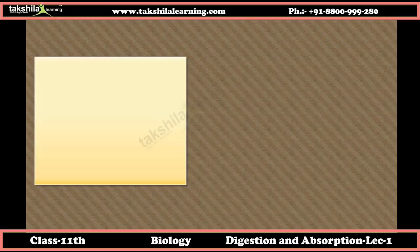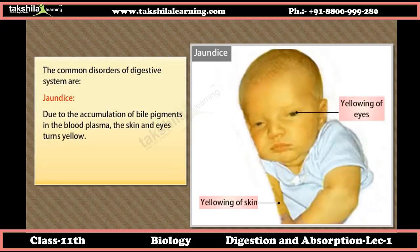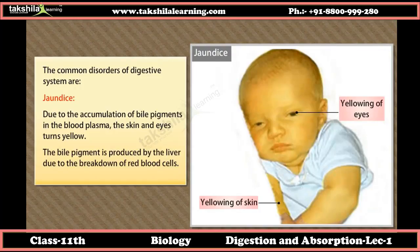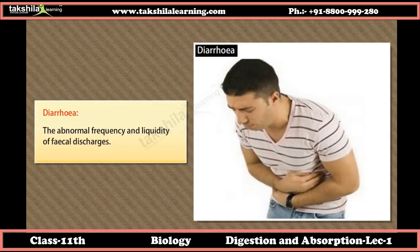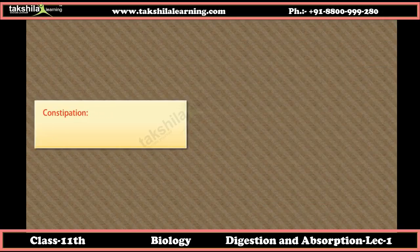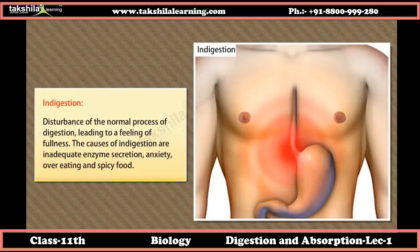Common disorders of the digestive system include: jaundice, caused by accumulation of bile pigments in the blood plasma making skin and eyes turn yellow; vomiting, the ejection of stomach contents through the mouth; diarrhea, abnormal frequency and liquidity of faecal discharges; constipation, difficult evacuation of faecal matter; and indigestion, a disturbance of normal digestion leading to a feeling of fullness, caused by inadequate enzyme secretion, anxiety, overeating, or spicy food.